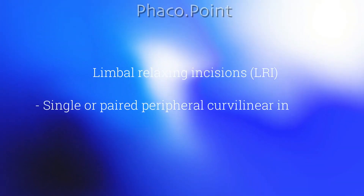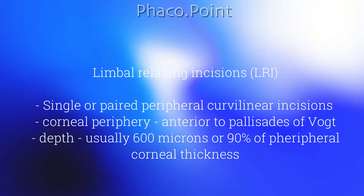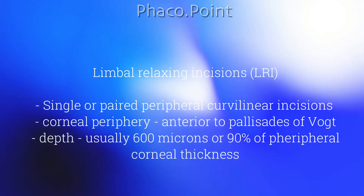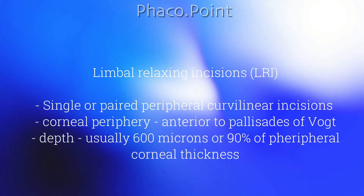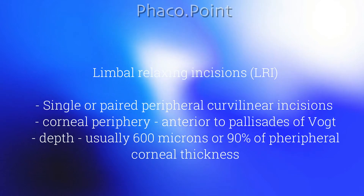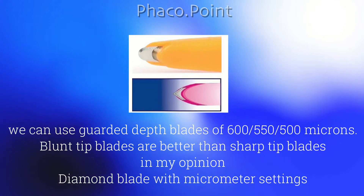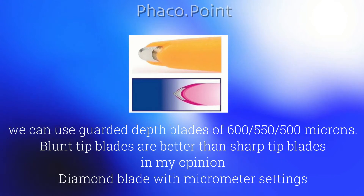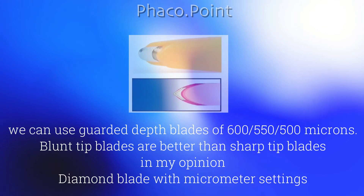Limbal relaxing incisions are either single or paired curvilinear incisions made in the extreme periphery of the cornea, just anterior to the palisades of Vogt, usually to a depth of above 90 percent of the peripheral corneal thickness. For performing limbal relaxing incisions one can use a 600-micron or 550-micron guarded depth blade — either blunt-tipped or sharp-tipped. The blunt tip gives a much better cut than a sharp tip, or you can use a diamond blade with a micrometer setting.